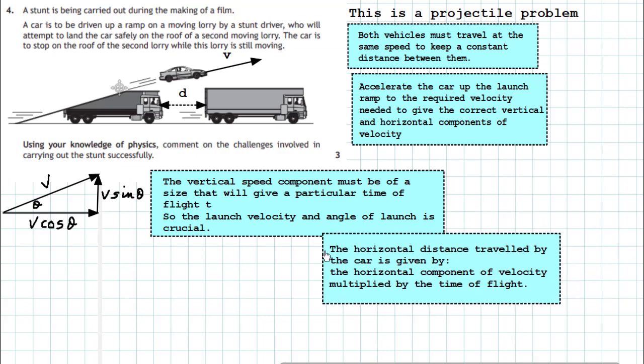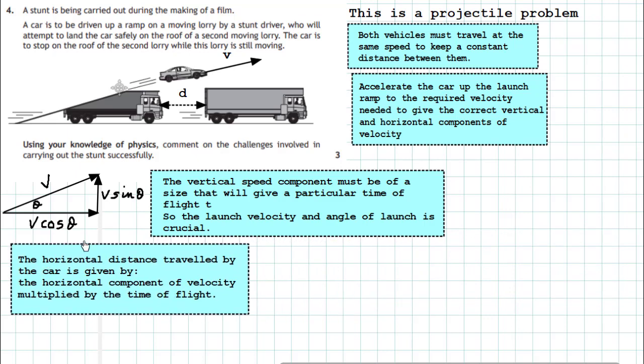Once we've got that, it's the horizontal distance travelled—it must equal the distance between the two vehicles. Now the horizontal distance travelled by the car is given by the horizontal component of the velocity multiplied by the time of flight.